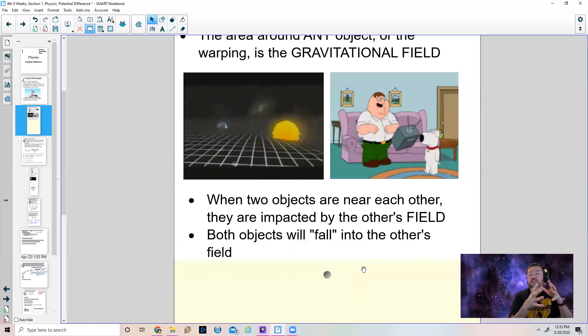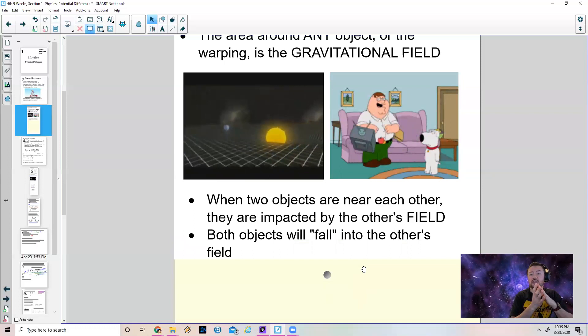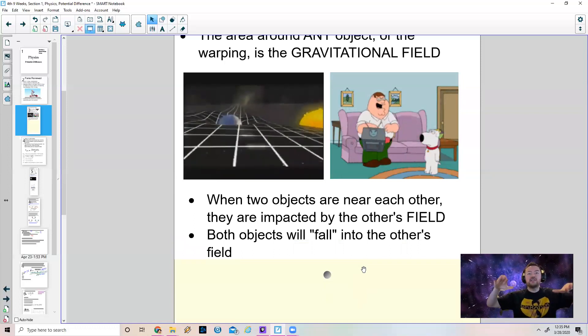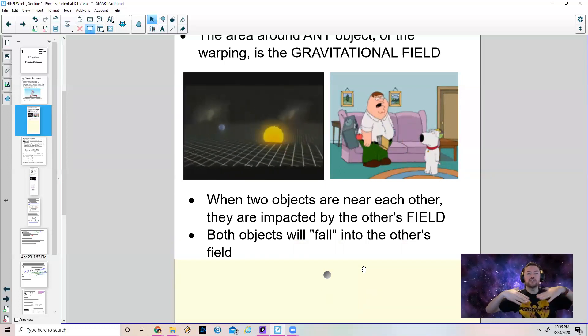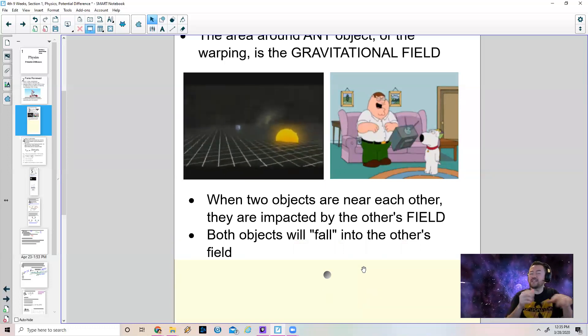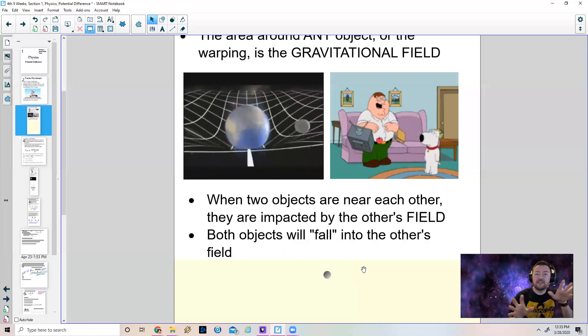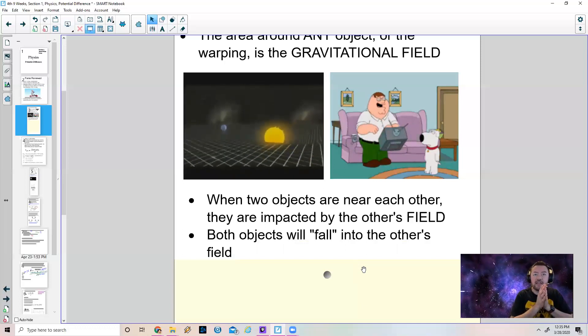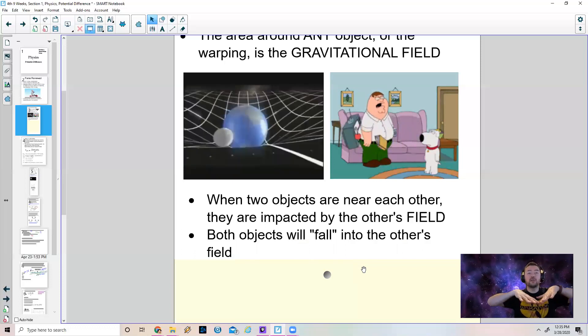When you take objects and get them next to each other, especially massive objects like the Earth and the Sun, they tend to want to fall into each other's fields. The thing about it is that the Sun is so much more massive than all of the stuff combined in our solar system that everything wants to fall into our Sun's field. There are two gravitational fields at play between the Earth and the Sun, and more based upon the objects that you have in our solar system, but the Sun's is so massive that everything wants to fall towards the Sun.